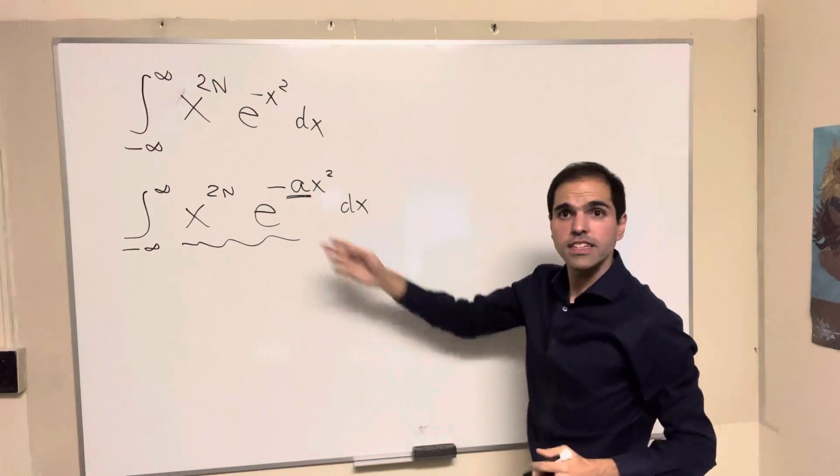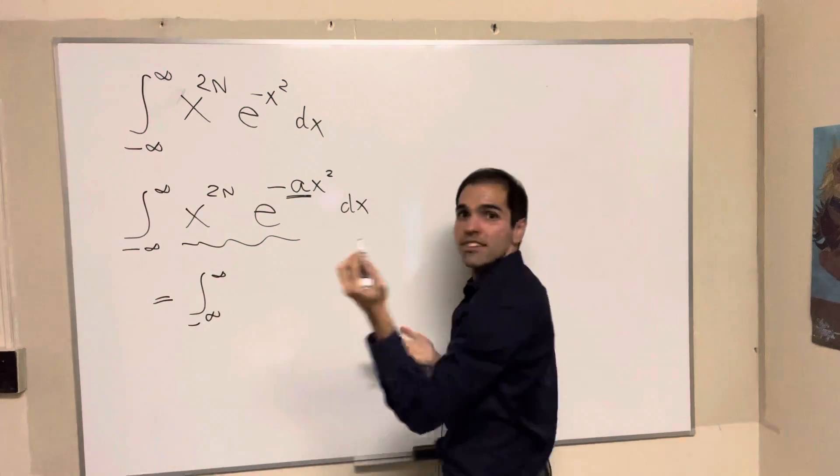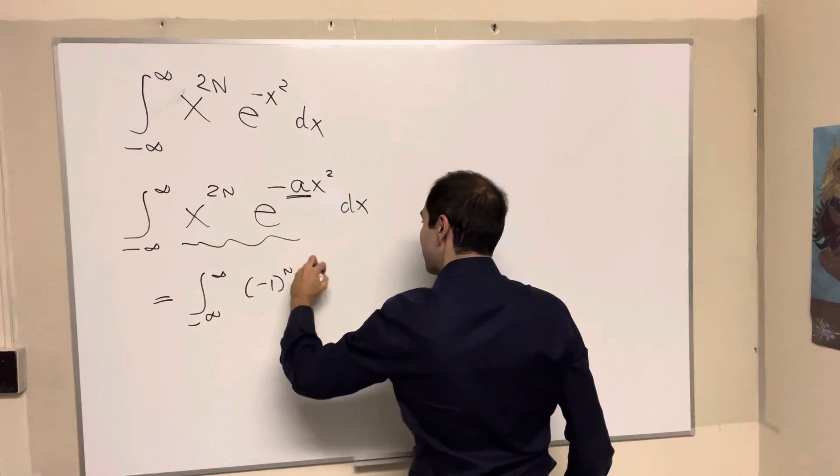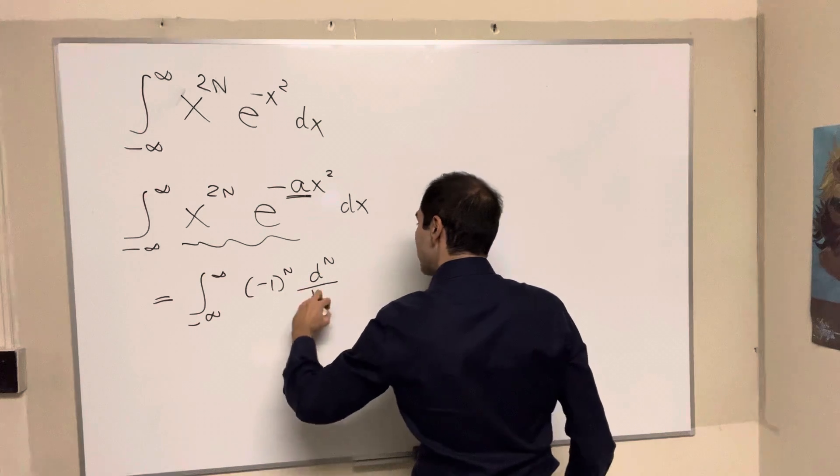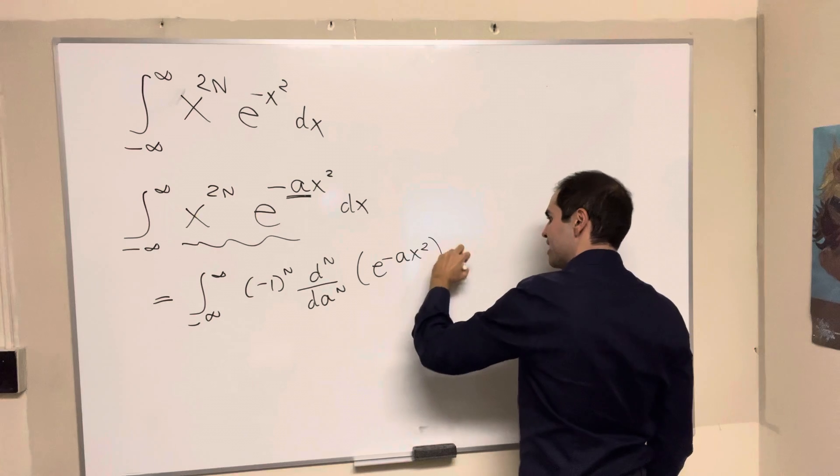In other words, this thing here is just minus 1 to the n, of the nth derivative with respect to a of e of minus a x squared, dx.